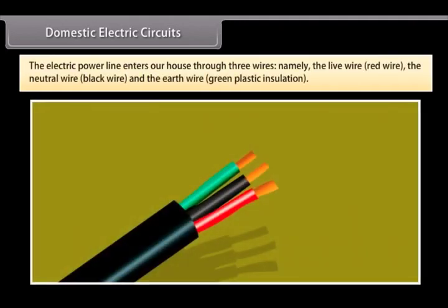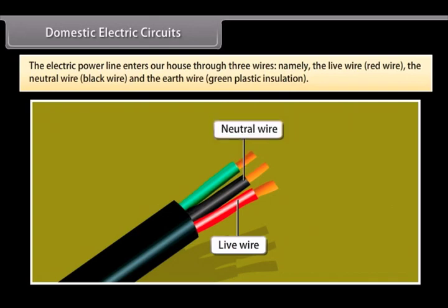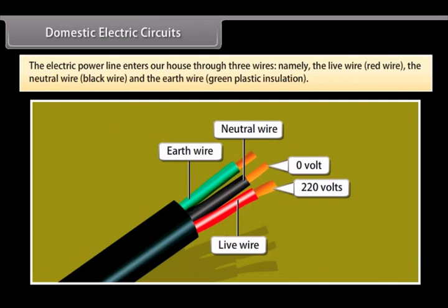The electric power line enters our house through three wires: the live wire (red wire), the neutral wire (black wire), and the earth wire (green plastic insulation). The live wire has a high potential of 220 volts and the neutral wire has zero potential. Thus, the potential difference between the live wire and the neutral wire is 220 minus zero which equals 220 volts.